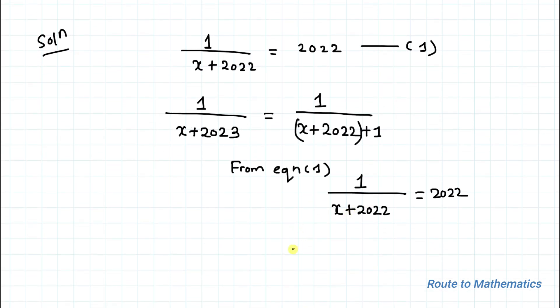Now we will just do the reciprocal. So by doing reciprocal we have x+2022 equals 1/2022. Let's take it as equation 2.